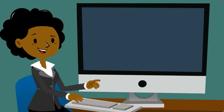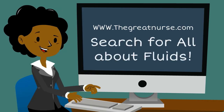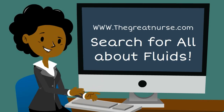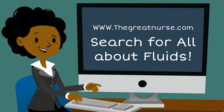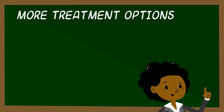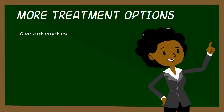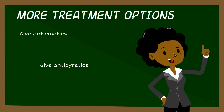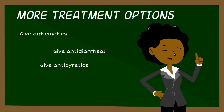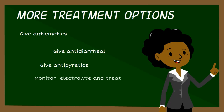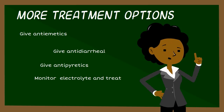Check out the All About Fluids lecture for information on isotonic, hypertonic, and hypotonic fluids and which fluids fall under each category. If the patient has a known cause like diarrhea, nausea, or vomiting, give anti-diarrheal medication and anti-emetics. For a high fever, give antipyretics. Monitor electrolytes and treat any imbalance if present.